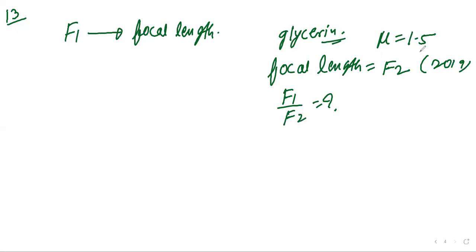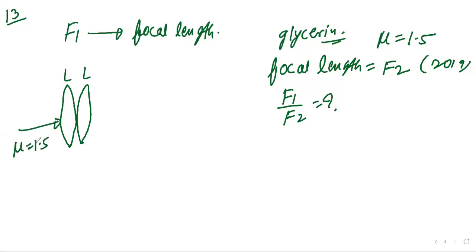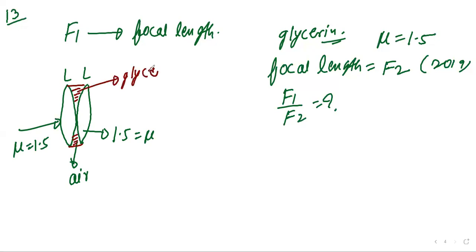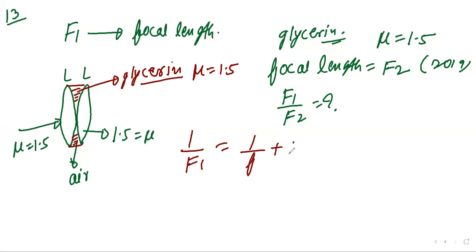These are your two convex lenses joined with each other, each having refractive index 1.5. Without glycerin, 1/f1 = 1/f + 1/f = 2/f, so f1 = f/2.